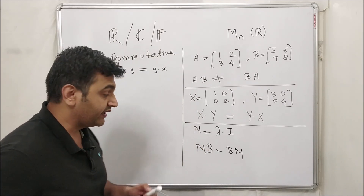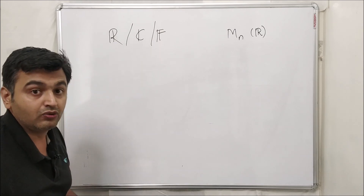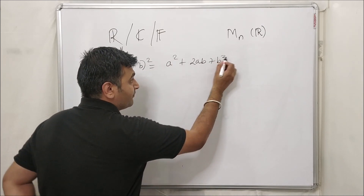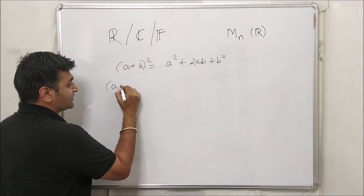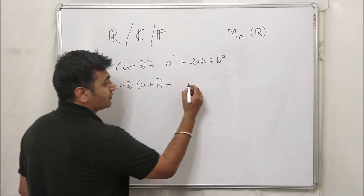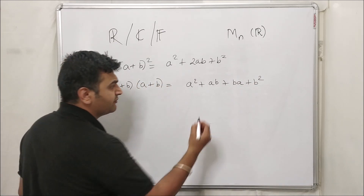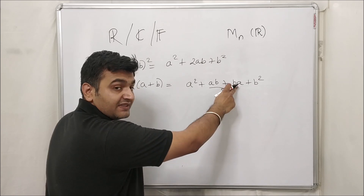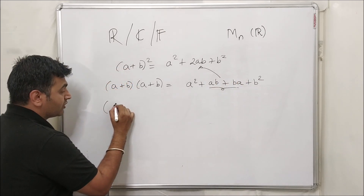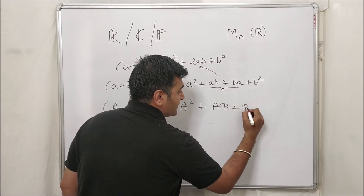This non-commutativity directly impacts the very famous formula from school. We know (a+b)² = a² + 2ab + b². But if you actually expand (a+b)(a+b), you get a² + ab + ba + b². In real numbers, since ab = ba, this simplifies to a² + 2ab + b². But in matrices, since AB and BA do not commute in general, (A+B)² = A² + AB + BA + B².